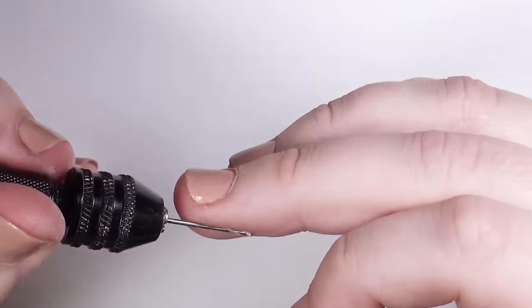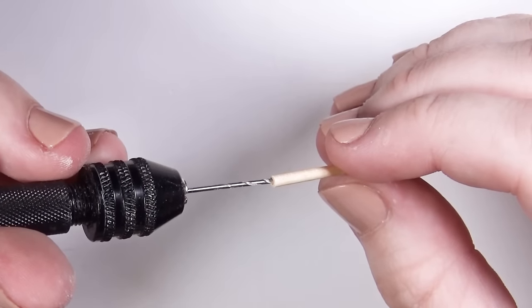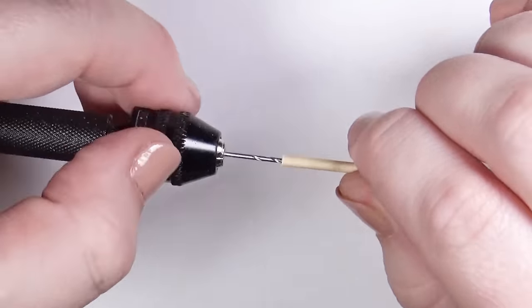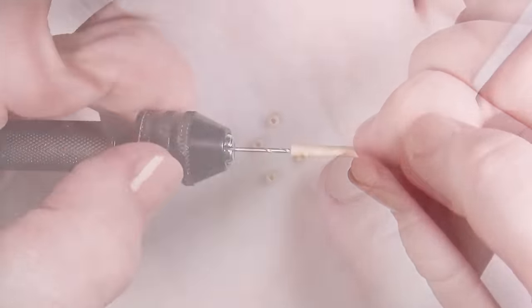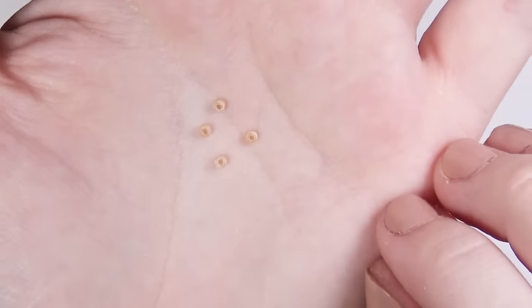I drilled a 1.5mm hole into a tiny dowel to create bolts. We'll need four for all four wheels. Adding these bolts will keep the wheels spinning free.